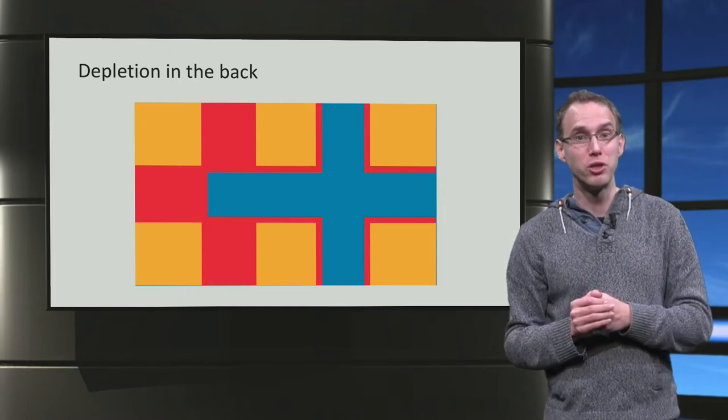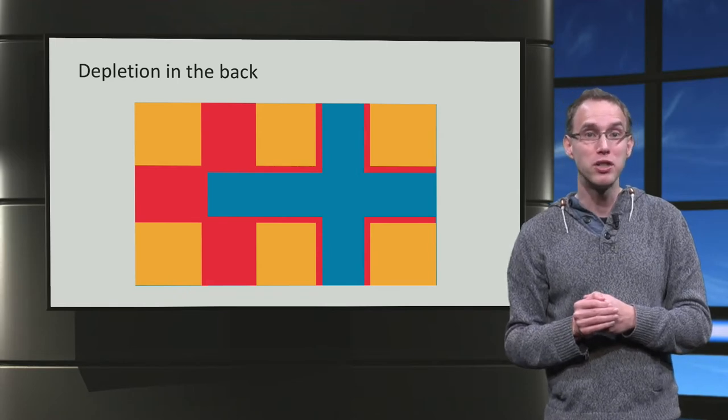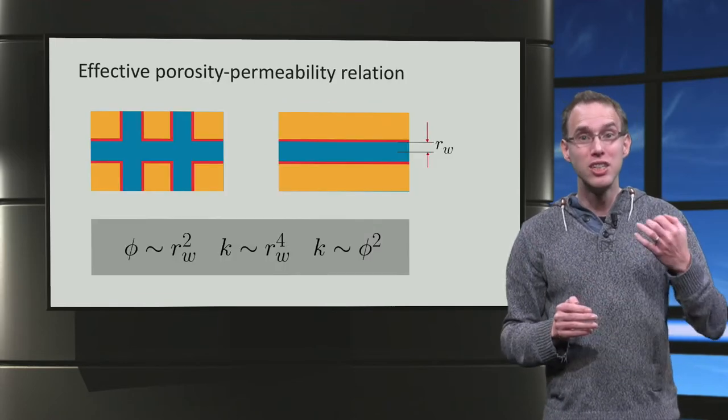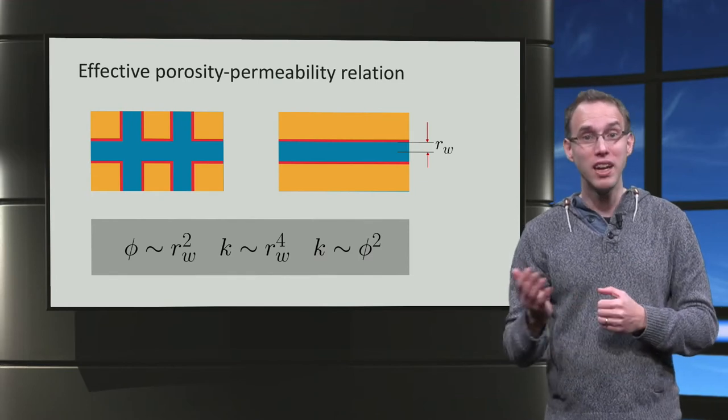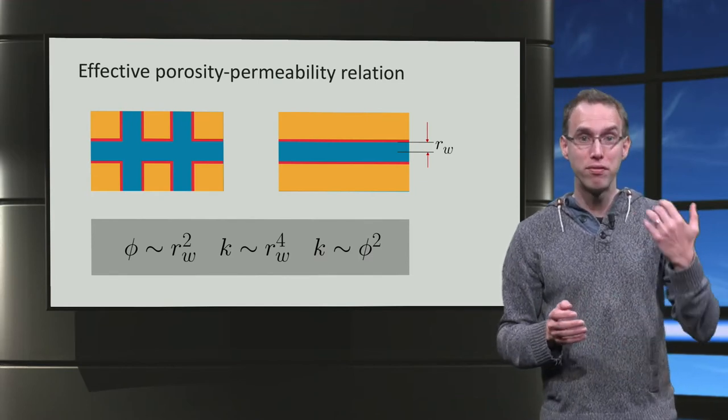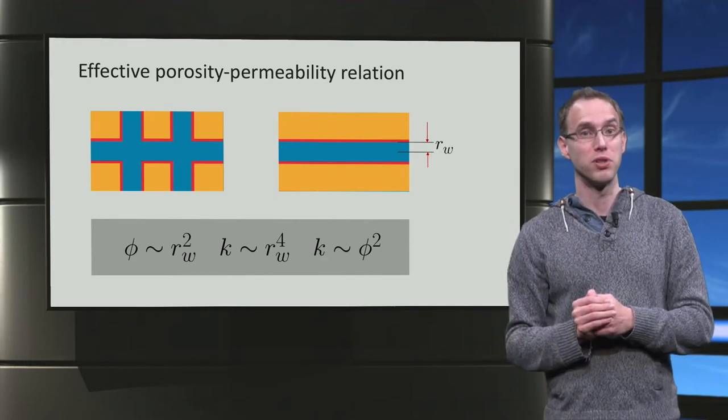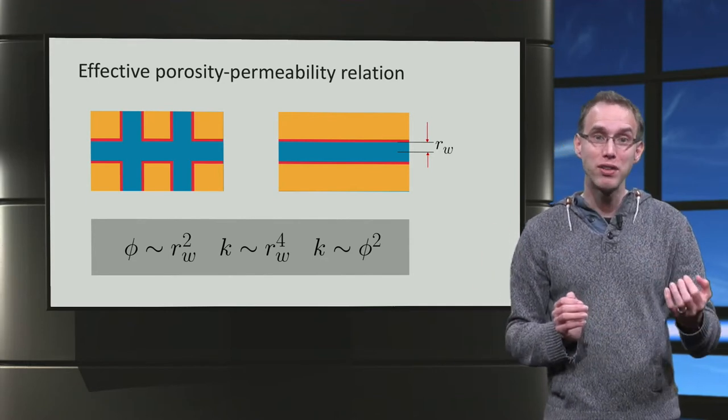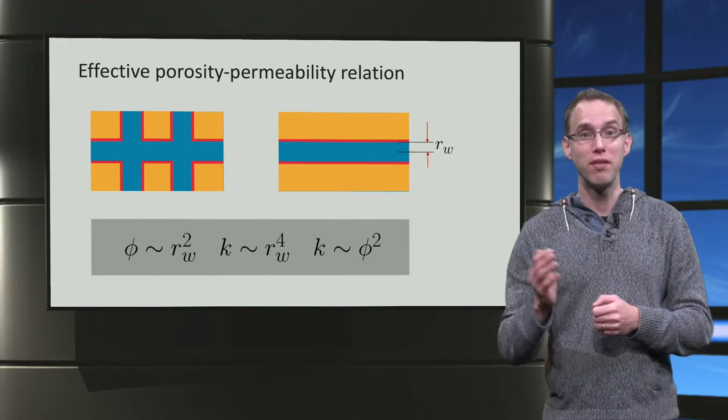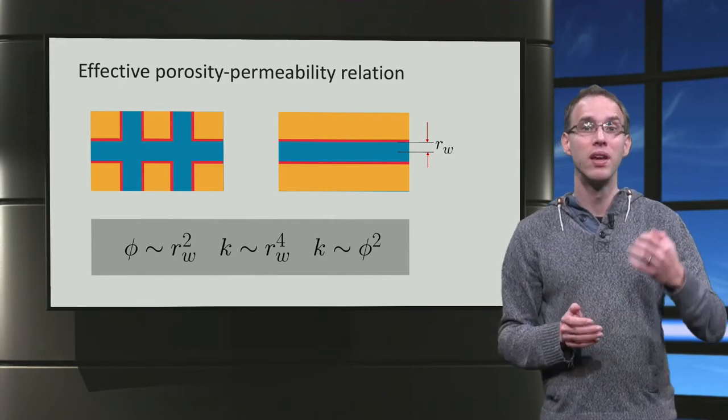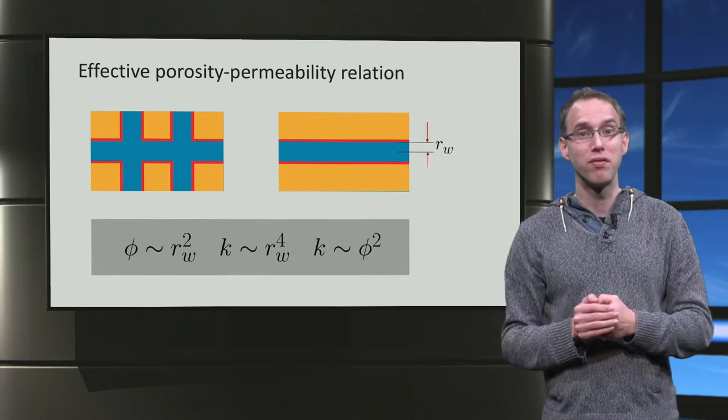If we have uniform growth in all tubes, we can basically replace the pore network by one effective tube. Just as a replacement resistance in an electric network. Now, phi scales as the open area. The permeability scales as Poiseuille flow. So we will have that the permeability scales as effective porosity squared.